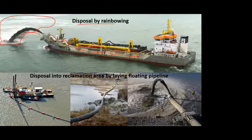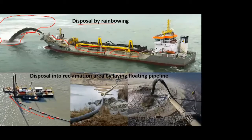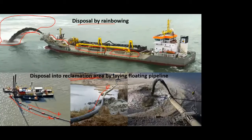The second disposal method is by pipeline. If you don't want to dispose of the material in water and need to take it to land, you lay a network or series of connected pipes. This is a floating pipeline — you can see it in the bottom-left figure floating over the water surface — and when it reaches land it becomes a normal pipeline. The material is then dumped into already excavated pits in a demarcated reclamation area, where it stays until the water dries out and the soil may be used for some other purpose.